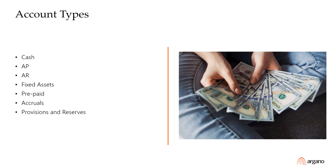For prepaid accounts, such as insurance, they document the composition of the balance and justify it. For accrual accounts, such as bonuses, they document the composition of the balance and also justify that. And for provision and reserve accounts, they also document the composition of the balance and justify it, just like accrual accounts.